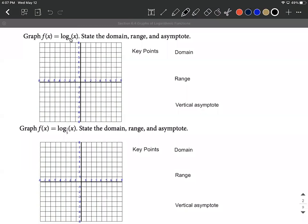Okay, let's graph some logarithmic functions. We want to graph log base 5 of x and then log base 1/5 of x. We'll identify some key points, the domain, range, and vertical asymptote of each one of these.